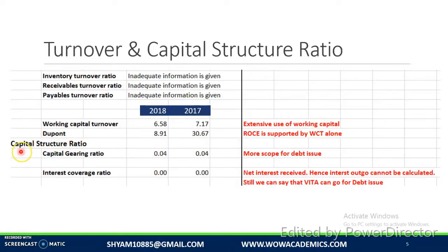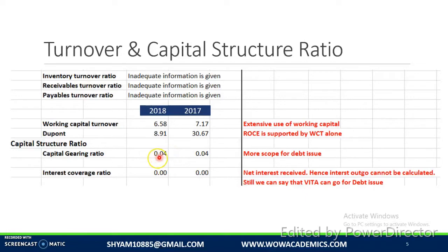Moving on to the capital structure ratio. We have taken the capital gearing ratio as debt divided by equity. The ratio is more or less the same — it indicates only 0.04, or in other words only 4% of debt is used when compared to equity. So we can say we have a huge benefit of getting more debt into our company, and there's a good chance we could increase our debt.